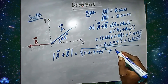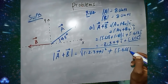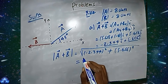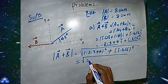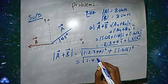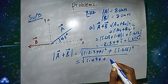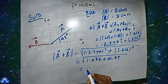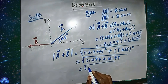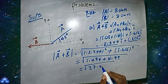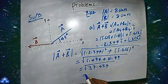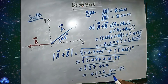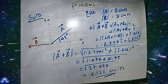This equals the square root of 5.494 plus 31.99, which equals the square root of 37.484, therefore the magnitude of vector A plus vector B equals 6.122 units.